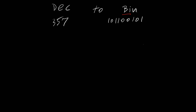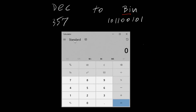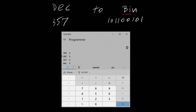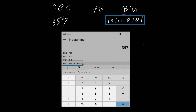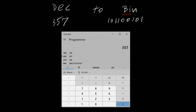Let's take a look using a calculator. So first we have to change the view from standard to programmer and make sure decimal is selected, which it is as we can see here, and then enter 357. 357 decimal gives us a binary value of 101100101, and zeros to the left don't count.